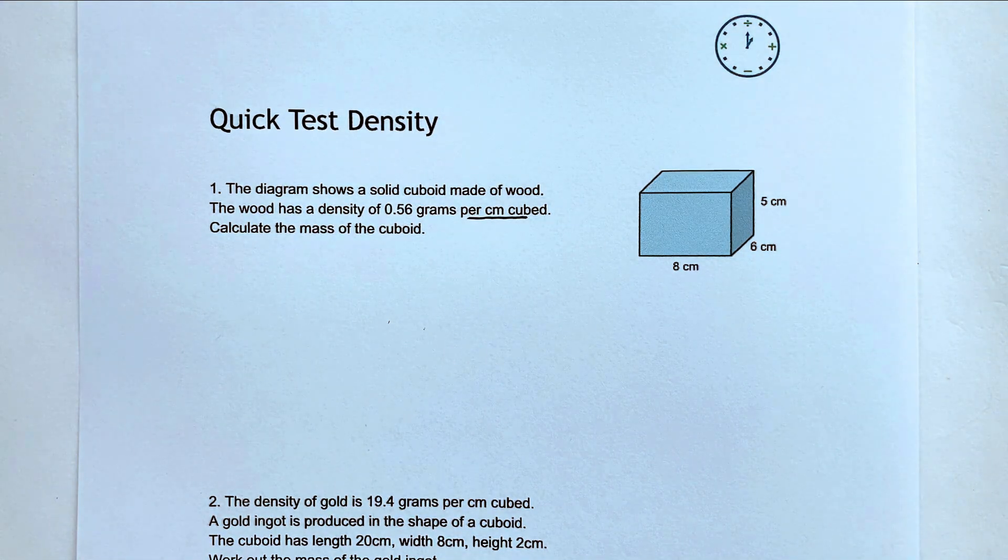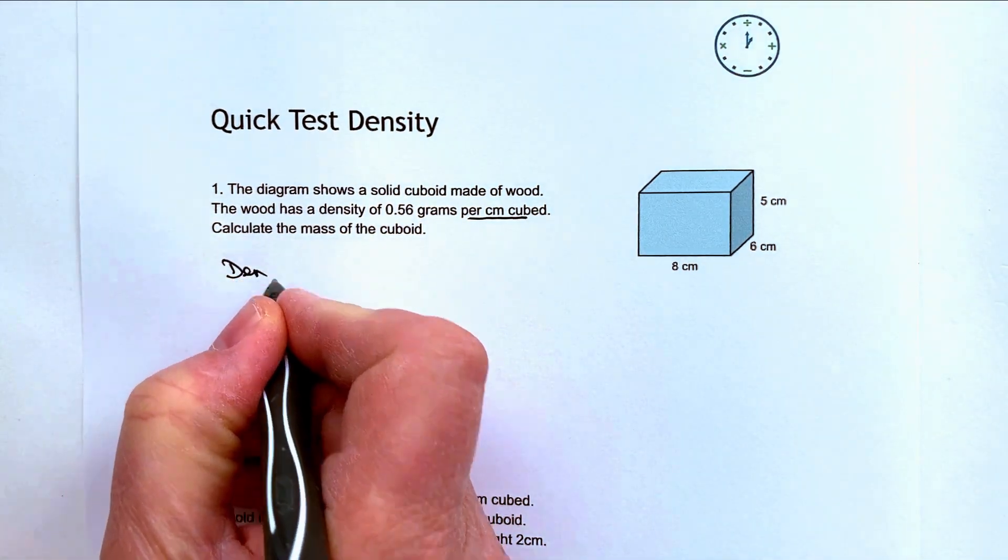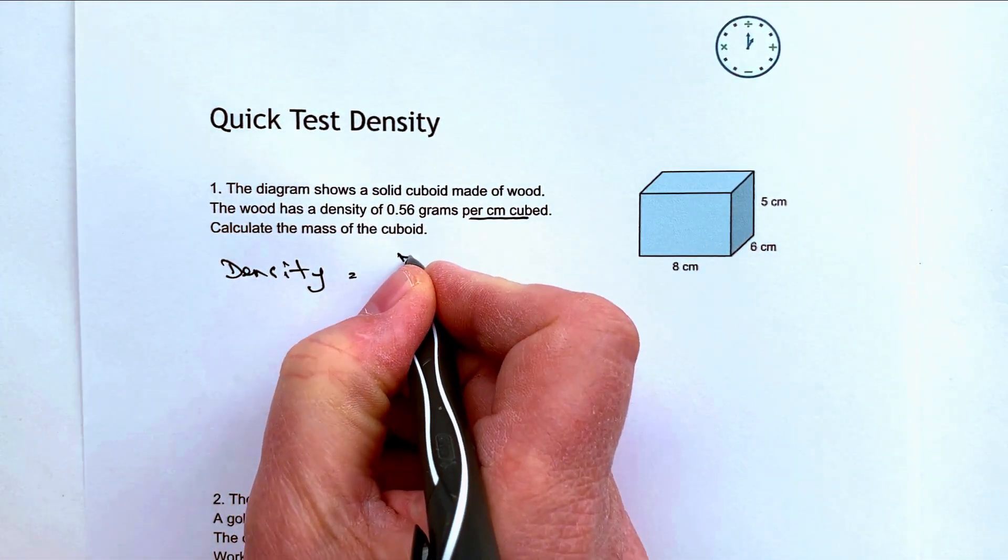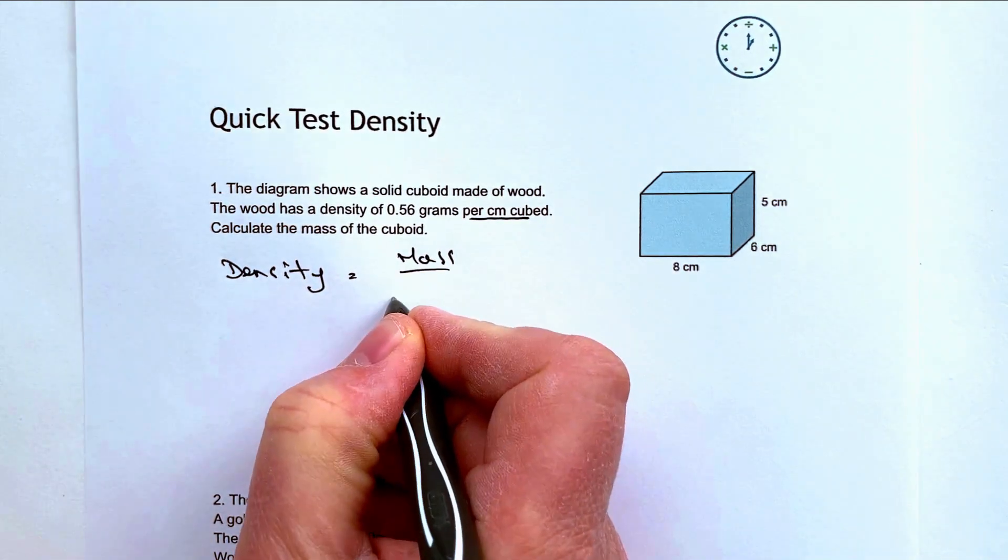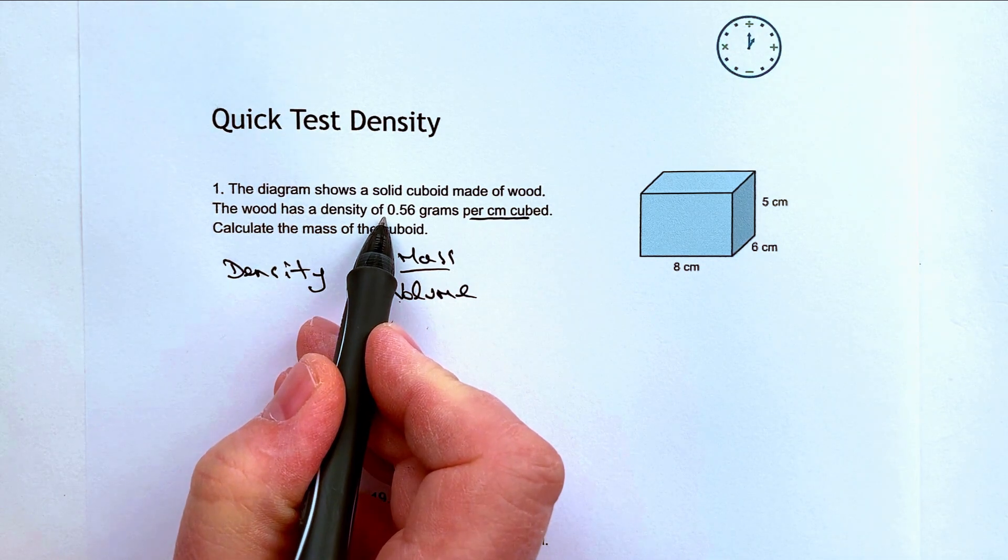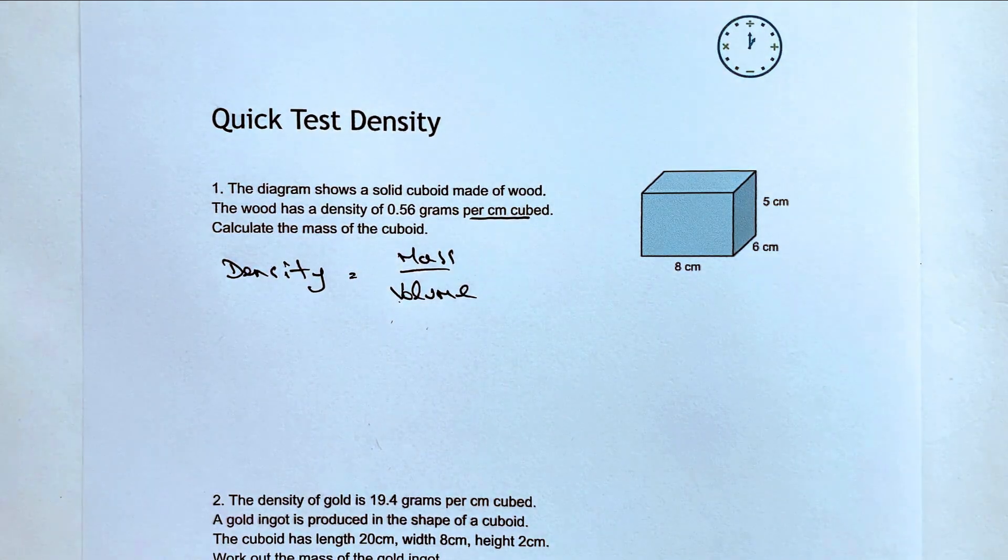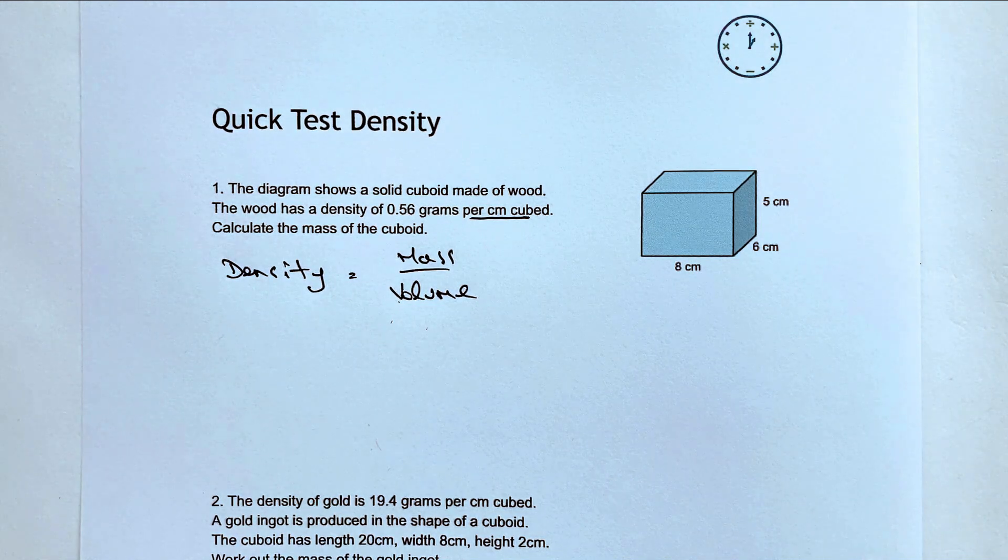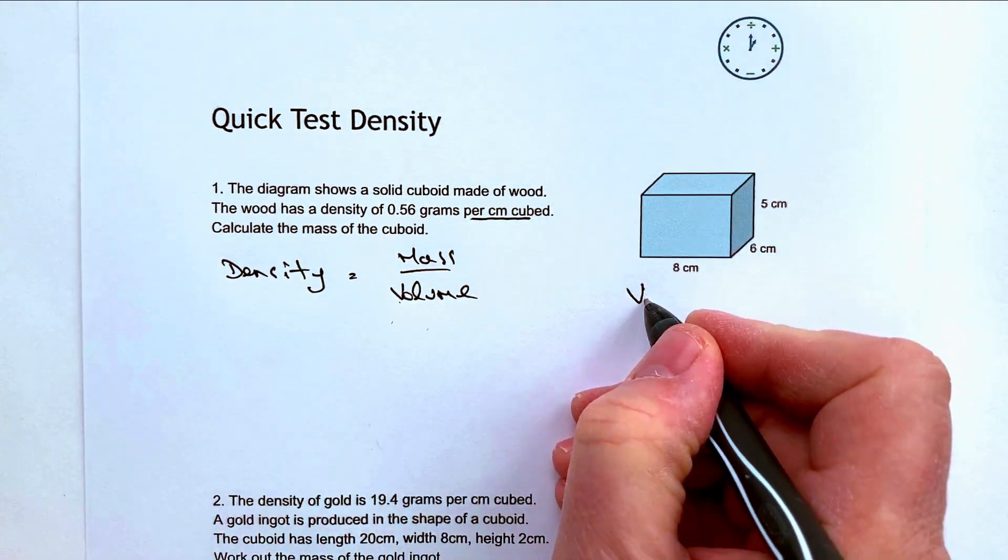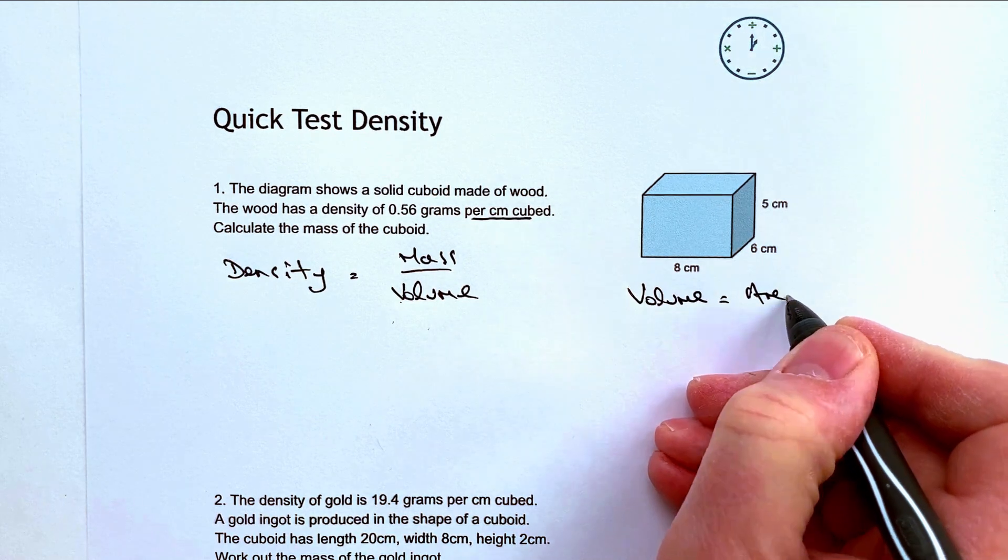So let's do that first because really what we're trying to do is we're trying to use the formula density equals mass over volume. We know the density, we can work out the volume, and the mass is what we're being asked to calculate. So we're going to use that formula but the first thing is we need to figure out the volume first. So the volume is going to be the area times the depth.